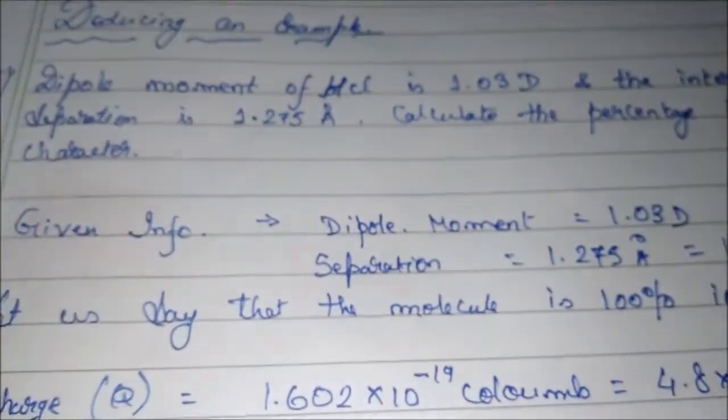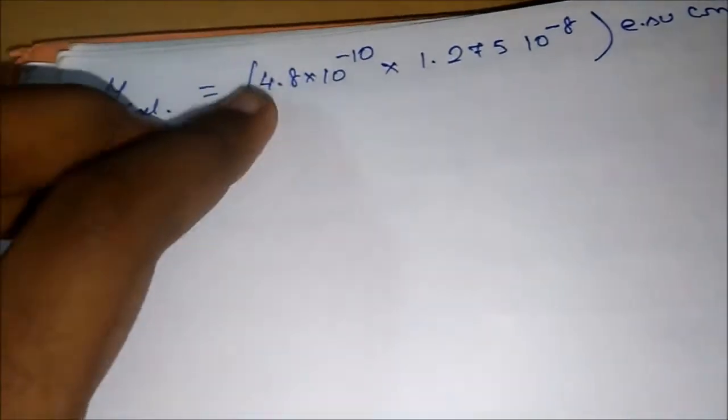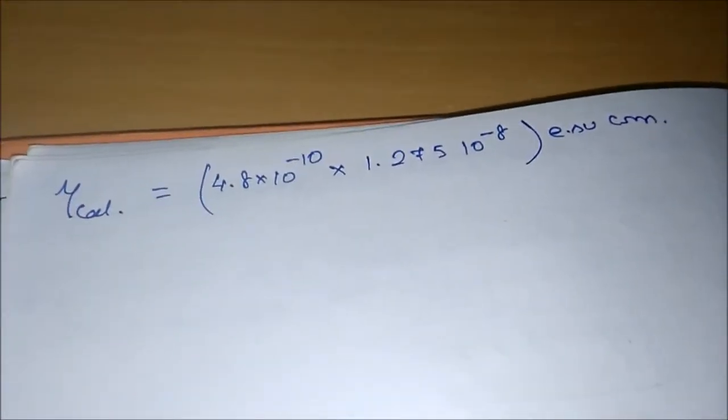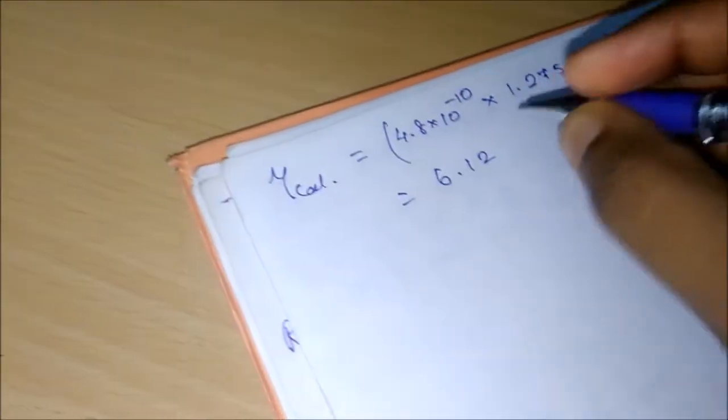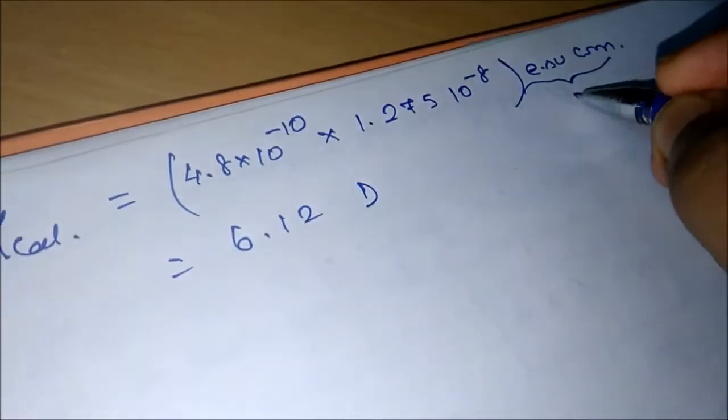So I'm going to change the page. Let's continue. So we have put in the charge, the separation, and the unit esu centimeter. This is nothing but the Debye. So if you calculate this, let me show you the calculation. If you just calculate it, you will get 6.12 D (Debye). This is just Debye—esu centimeter is nothing but Debye.